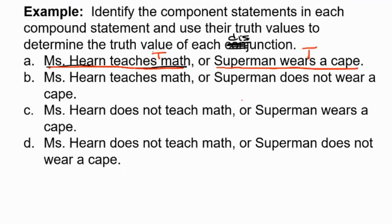So if I say to you, Ms. Hearn teaches math or Superman wears a cape, am I telling the truth or am I lying? That's right, I'm telling the truth. I'm saying that at least one of these, but possibly both, is true. So I'm still telling the truth. So the overall truth value of part A would be true. So whenever in general we have true or true, that's going to give us a true statement.